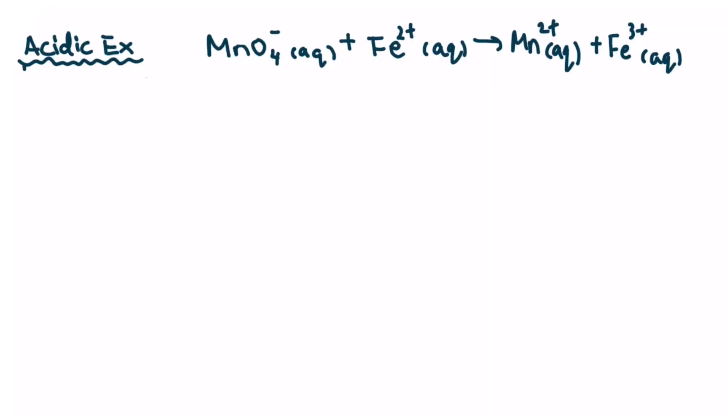Let's start with an acidic example. I'm telling you that this is an acidic solution, so that means you don't have to worry about step number eight. We have to divide the entire chemical reaction into two half-reactions. So which one's being oxidized, which one's being reduced? For our iron here, we have a 2+ charge on the left side and a 3+ charge on the right side. What happened from 2+ to 3+? It actually lost one electron, so it's being oxidized.